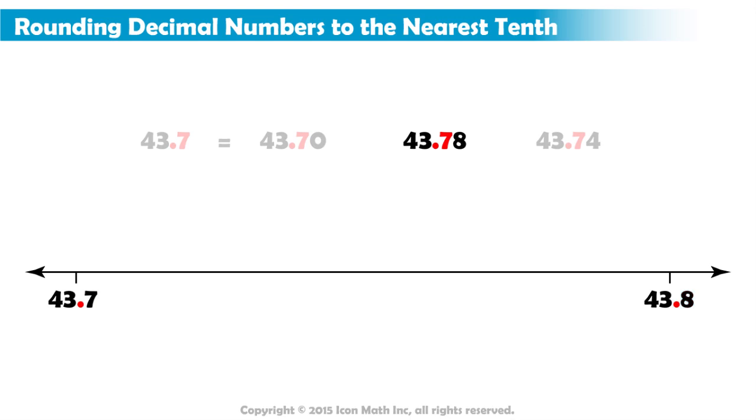We first draw nine spaces between the two benchmarks to represent the hundredths. This is 43 and 71 hundredths, and this is 43 and 72 hundredths, and so on.